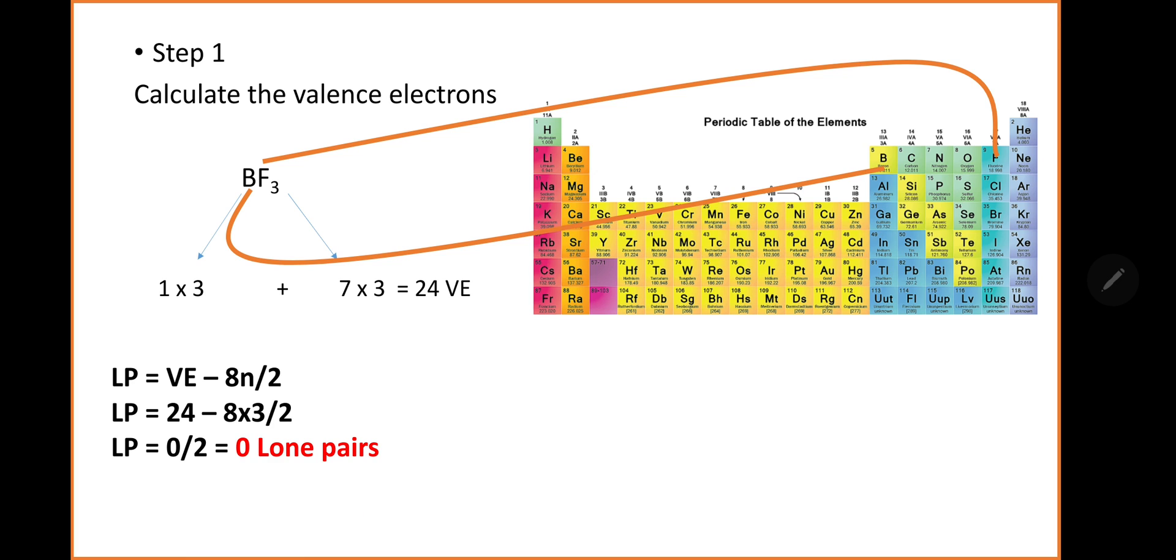Lone pairs equals valence electrons minus 8n divided by 2. We know this equation. So if we do the maths, we have 0 lone pairs.